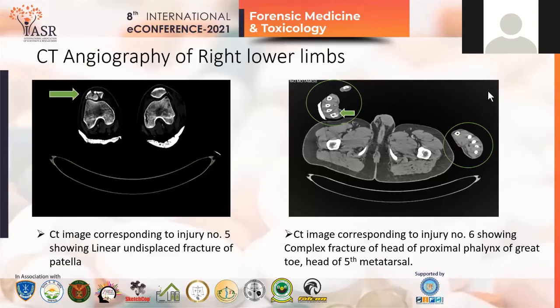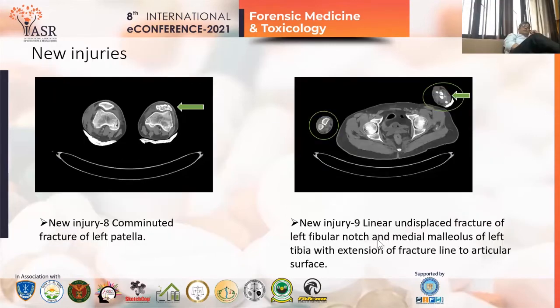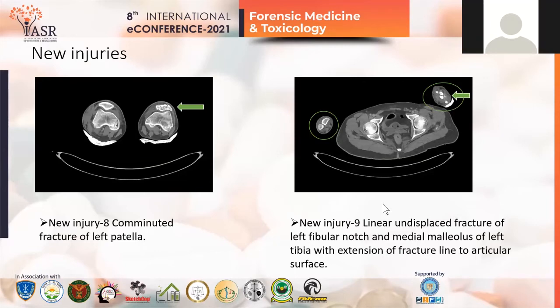On review of the CT report, we found two new injuries. One was a comminuted fracture of the left patella, which I considered as injury number eight — also grievous in nature. There was another injury showing a linear undisplaced fracture of the left fibular knot and the medial meniscus of the left tibia. A basic thumb rule for identifying fractures on CT images is to compare both sides. In the cross-sectional area of the fibula and tibia, the left side shows a fracture, indicated by the arrow.